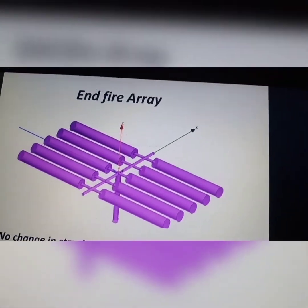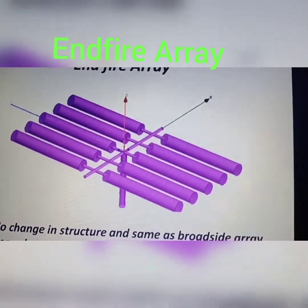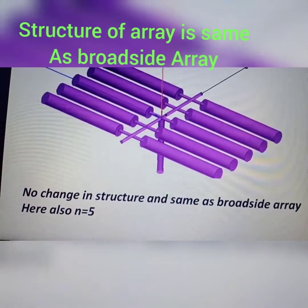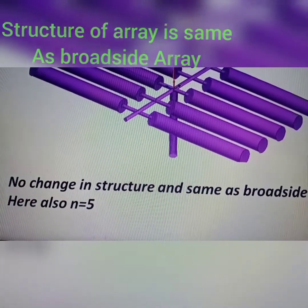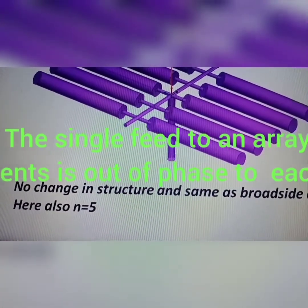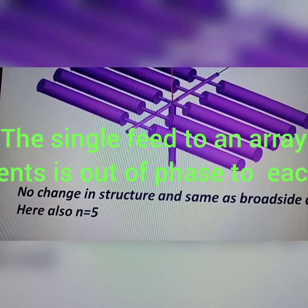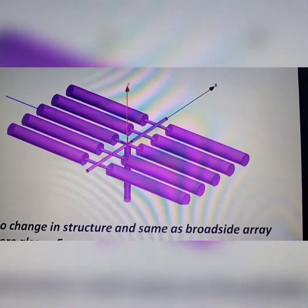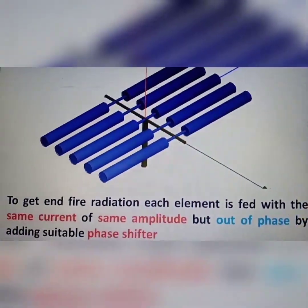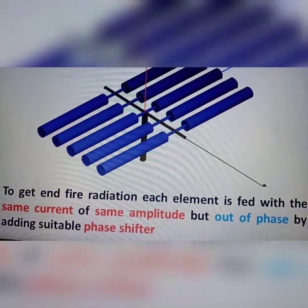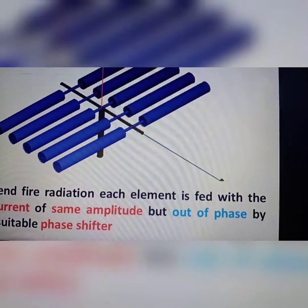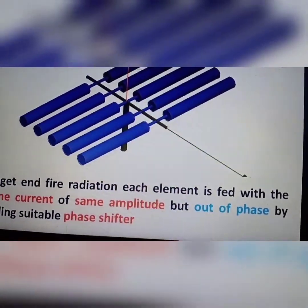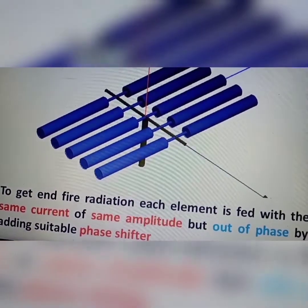So there is another arrangement called end fire. The structural representation is same, similar to broadside array. Only the change is that the microwave signal which is provided to each element is not in phase. First element is getting in phase, then the next element is out of phase. Like that, we have to feed. See here, I have written, to get the end fire radiation, each element is fed with the same current, same amplitude, but out of phase by adding suitable phase shifter.